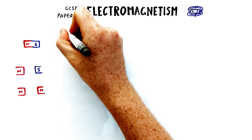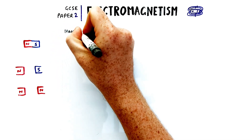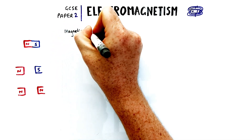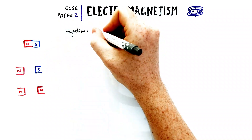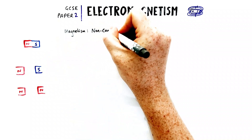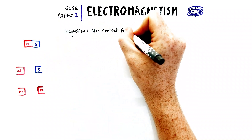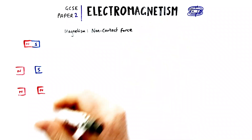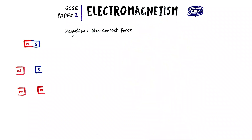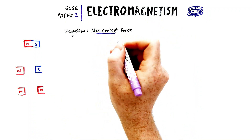Questions on electromagnetism are usually some of the worst answered at GCSE. So in this video I'm going to break the topic down stage by stage so that you have a really good understanding of what the topic is and how to answer any question on anything to do with electromagnetism.